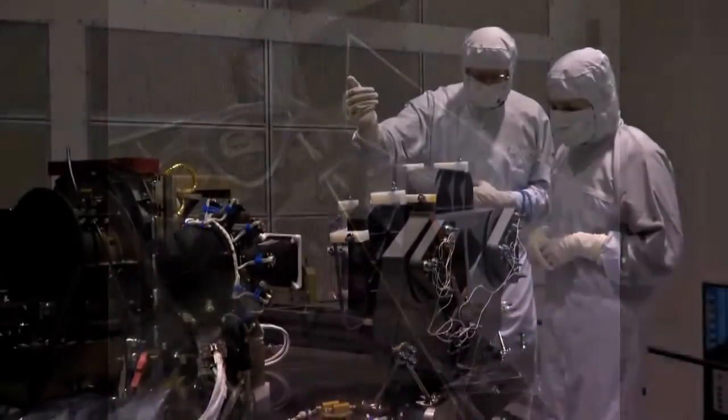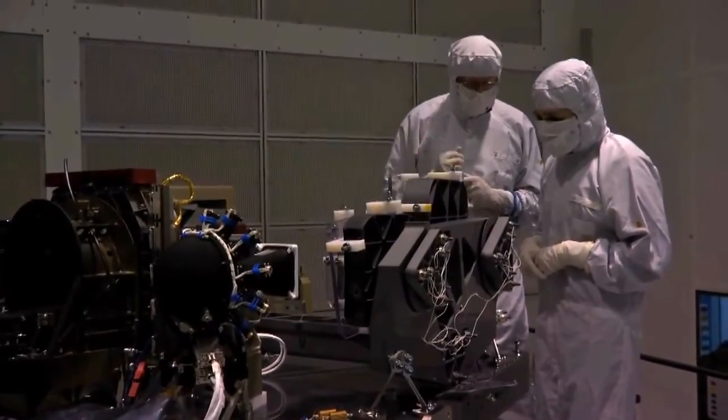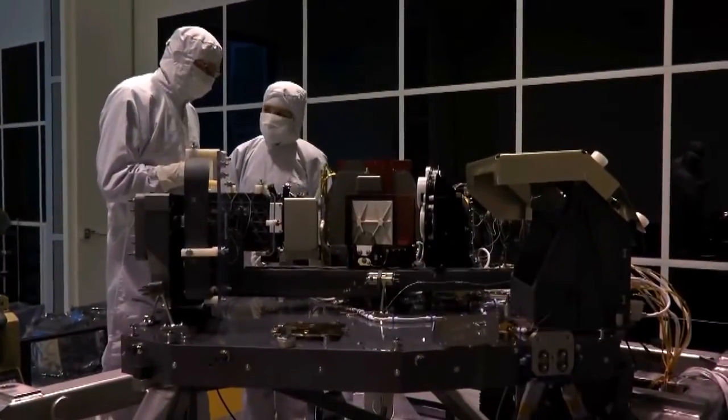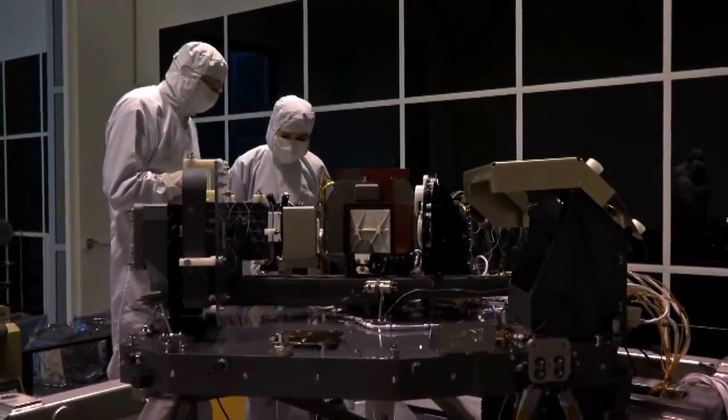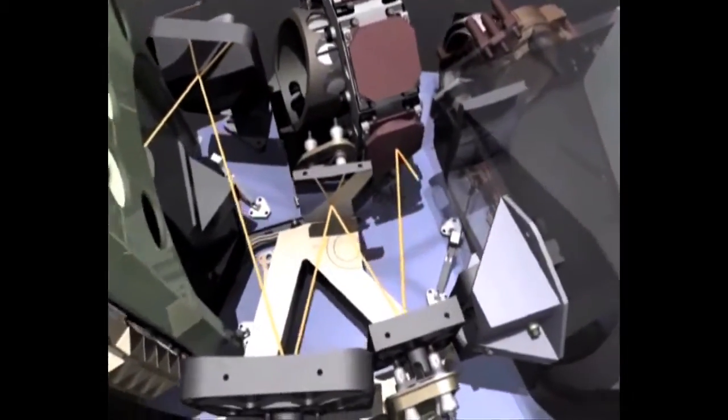Spectrograph is the area where the light is split up in its colors. We should move around and see it from the other side. Okay. So now we are on the spectrographic part of the instrument. The light is spread up in its colors.